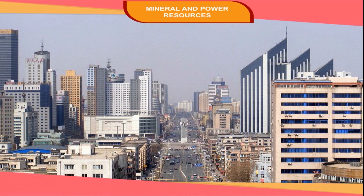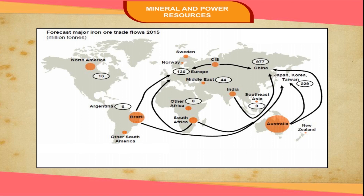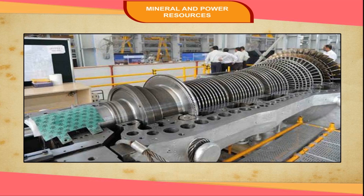China has large deposits of iron ore in Anshan, Maanshan, Chengyang, and Hainan. About half of the world's iron is found in China. Australia, Brazil, and Russia are also important producers. India has large reserves of good quality iron ore, but needs to improve its methods of mining for better results.